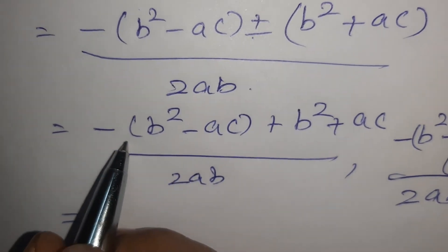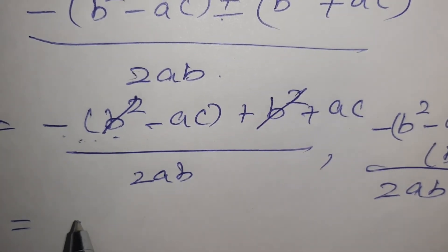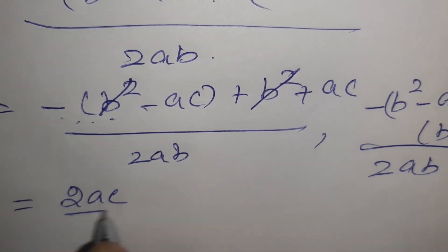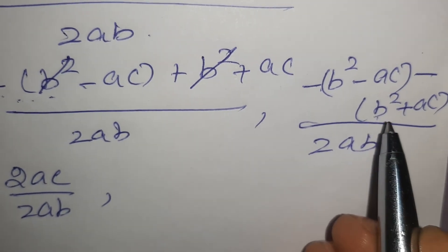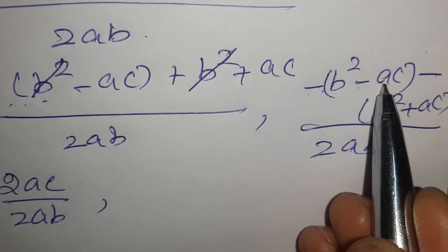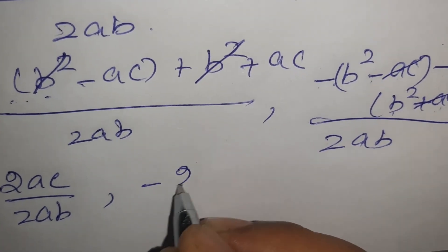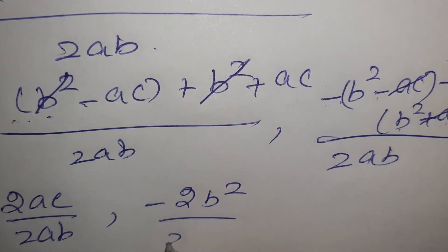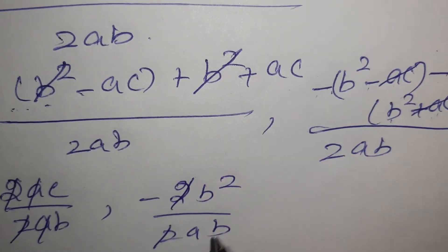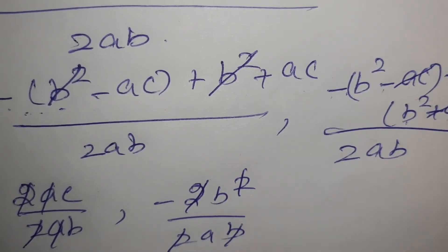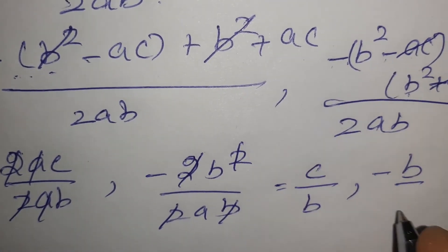Taking the plus case: −B² + AC + B² + AC = 2AC, divided by 2AB — the 2's cancel and A cancels, giving C/B. Taking the minus case: −B² − AC − B² + AC = −2B², divided by 2AB — the 2's cancel and B cancels, giving −B/A. So the roots of the equation are x = C/B and x = −B/A.